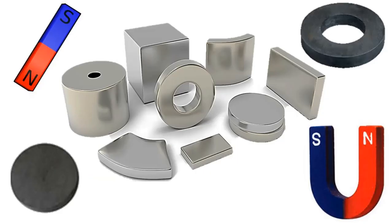In daily life, many permanent magnets are produced and used that attract materials made of elements such as iron, nickel, and cobalt. Permanent magnets are produced in stick, ring, round, and other shapes. By taking advantage of the magnetic field created by these magnets, a wide variety of devices are produced.